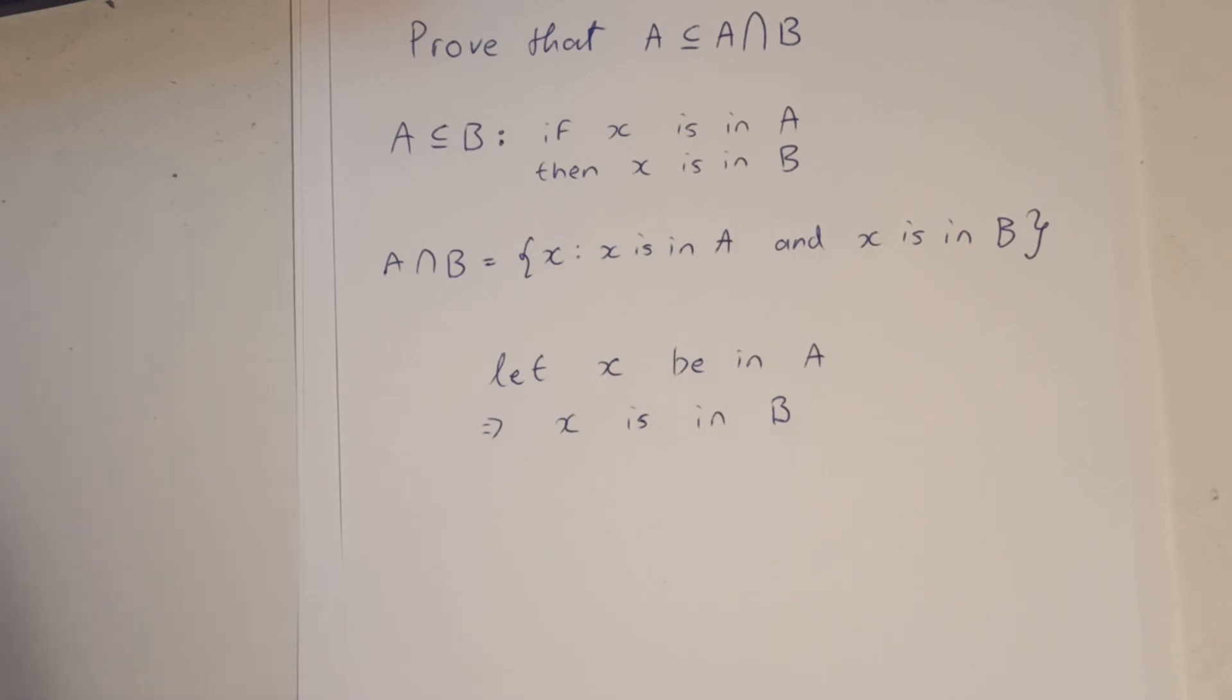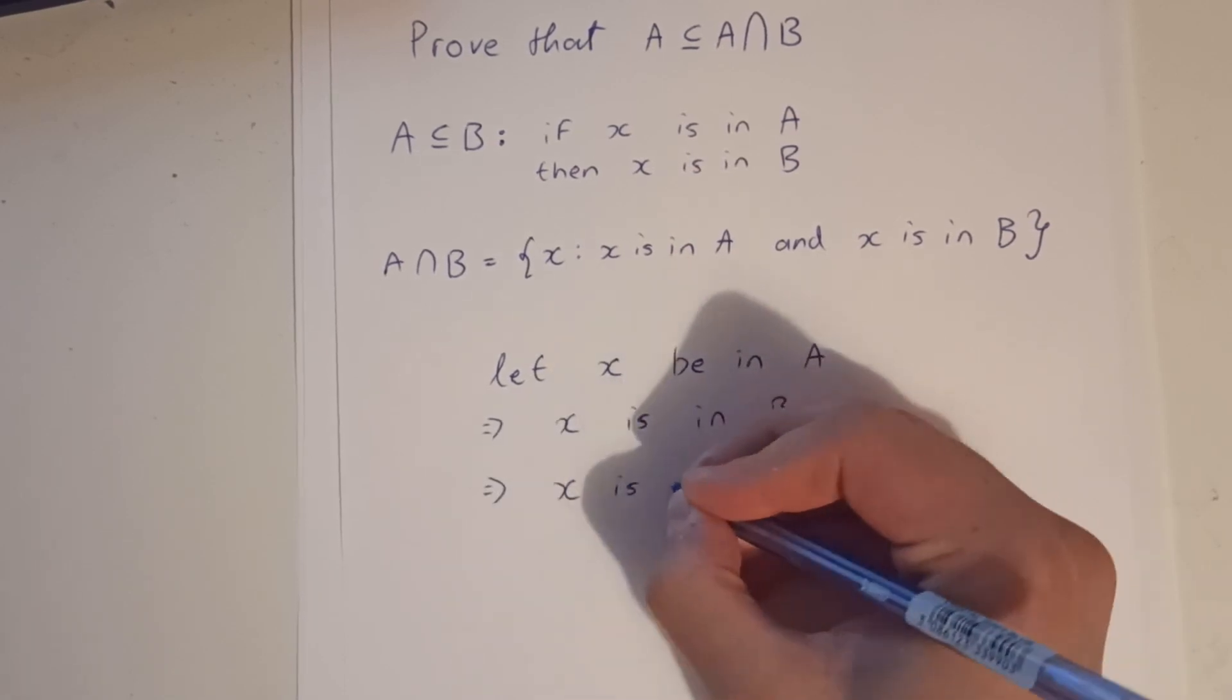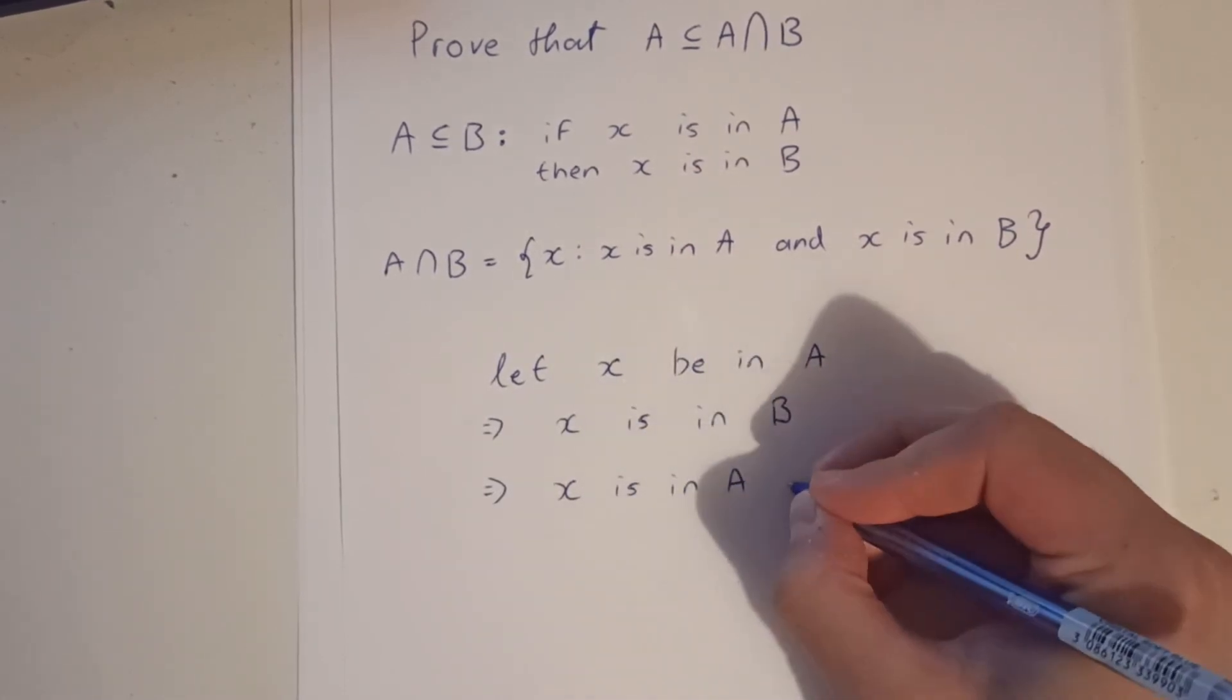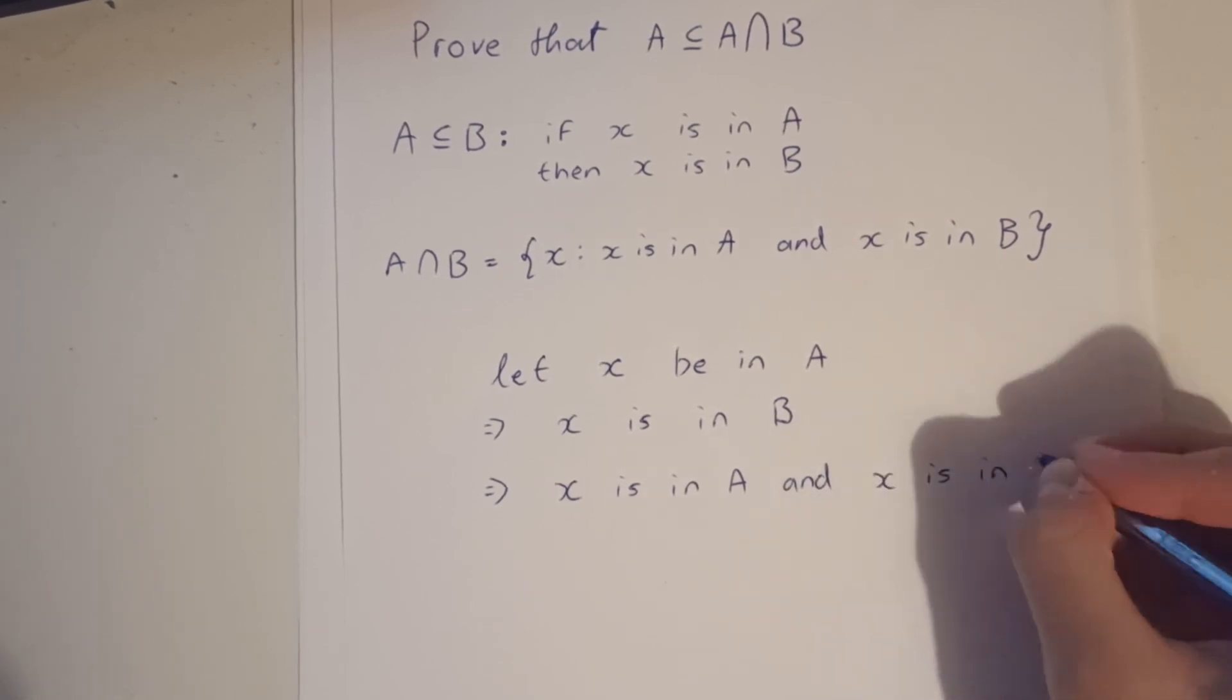Okay. What can we say now? Let X be in A, X is in B. So we know that X is in A, and it's in B. So we can write that down as our next line. X is in A, and X is in B.